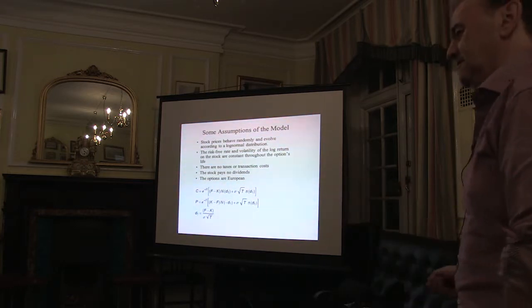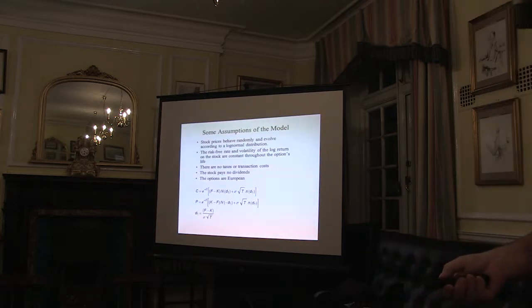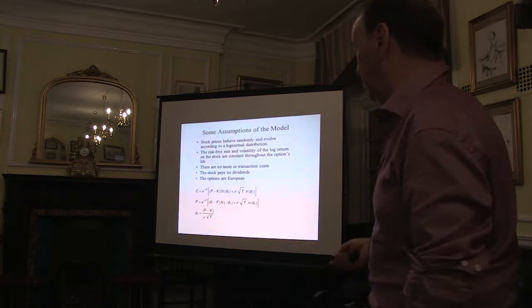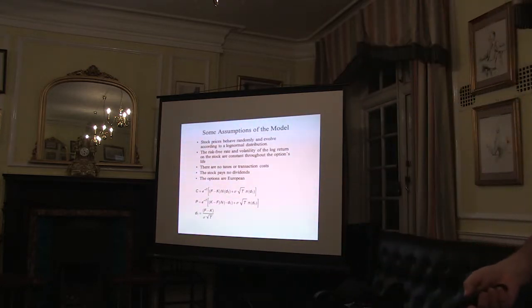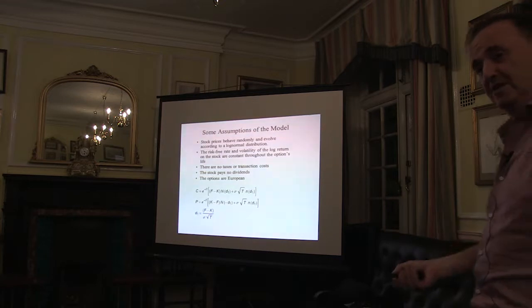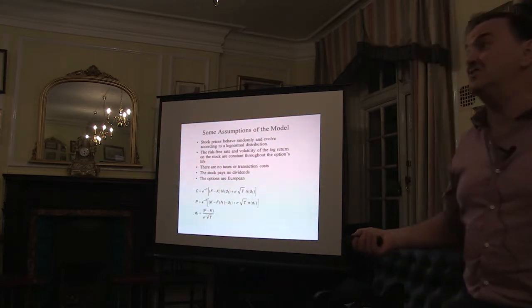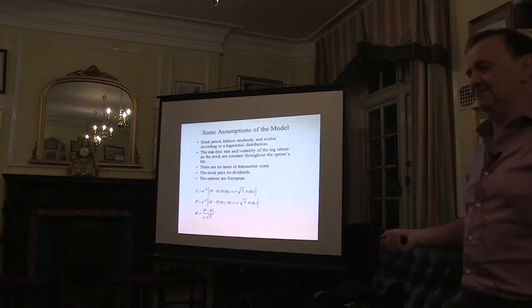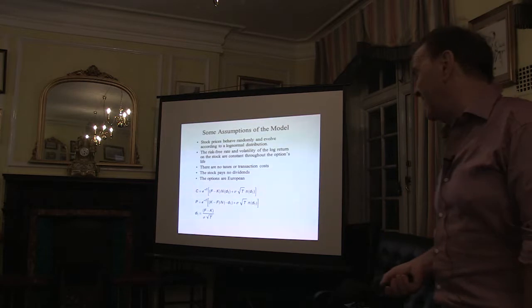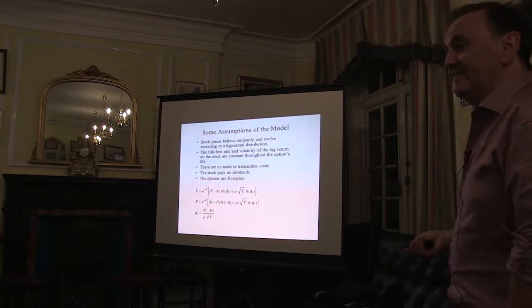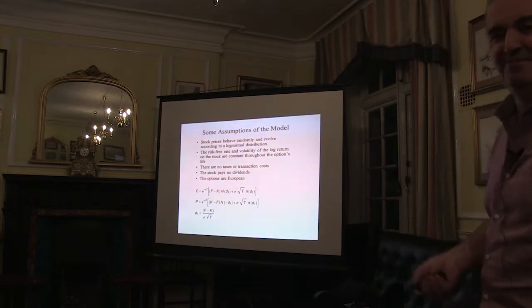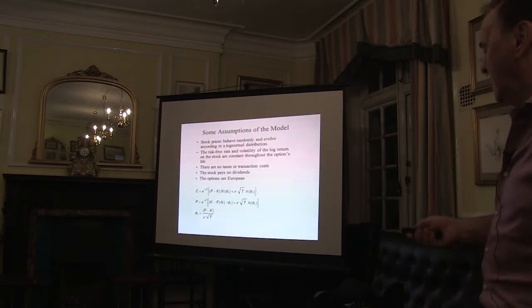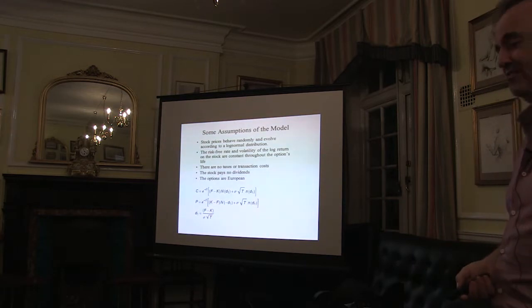There was no Nobel Prize in economics at that time so they couldn't give it to Bachelier. Although Poincaré said the thesis was quite interesting, he didn't say it was wonderful — which of course it was. So Bachelier got himself a rather minor academic position somewhere in France and didn't get Paris and the Sorbonne, which is a bit sad. But he's very well thought of now.